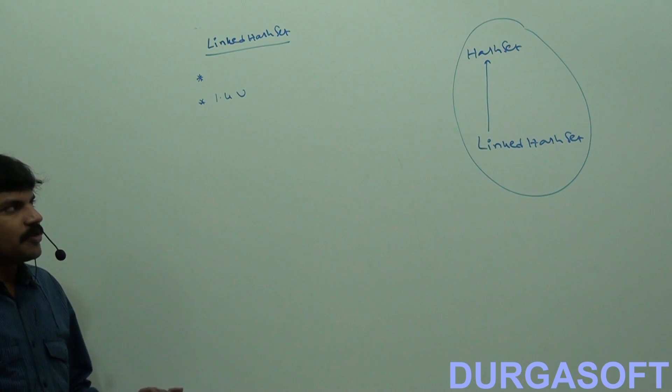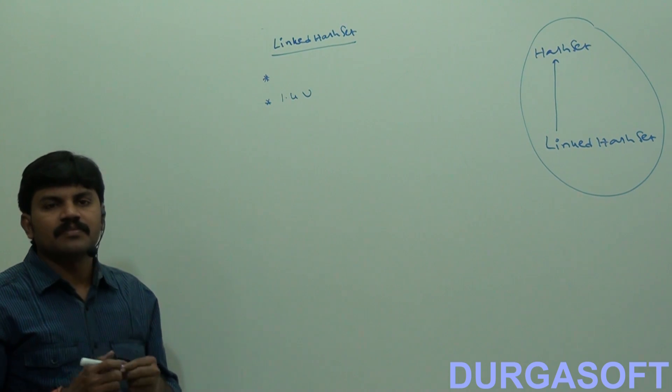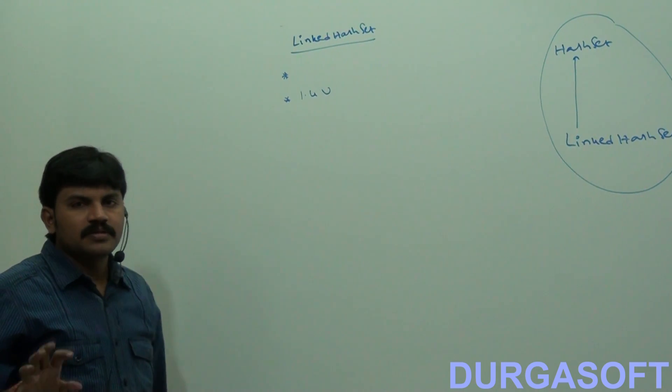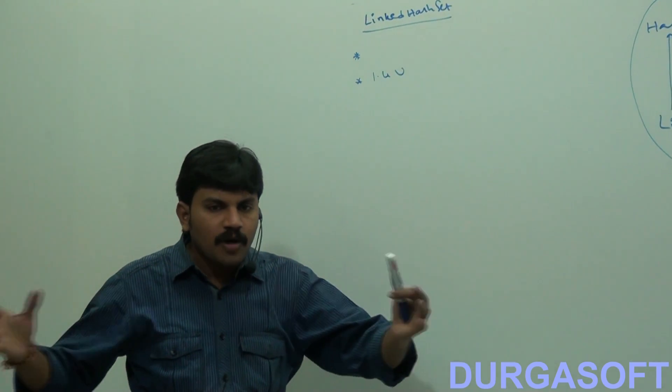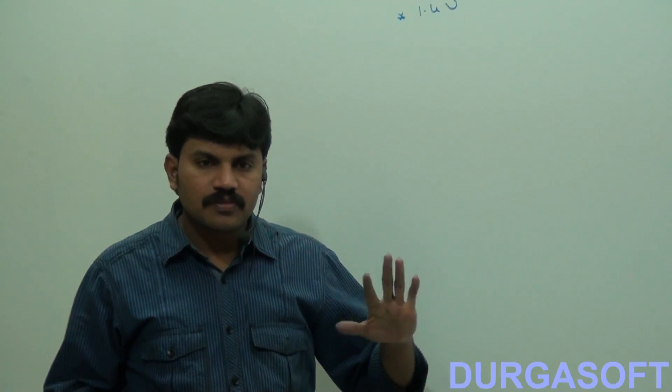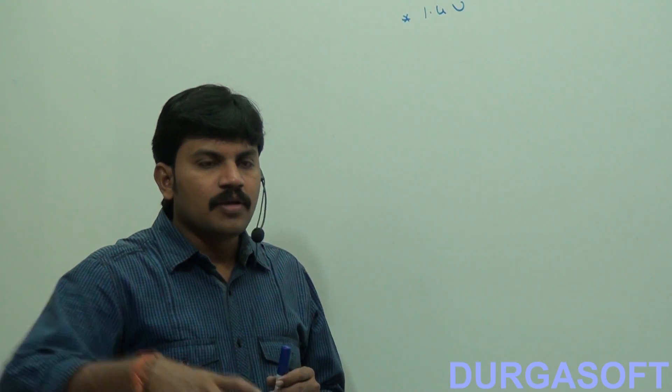What is the difference between HashSet and LinkedHashSet, or when should we go for LinkedHashSet? Very simply, sometimes our programming requirement is to represent a group of individual objects where duplicates are not allowed but insertion order must be preserved — in which order we inserted, in that same order the objects should be stored internally. Then we should go for LinkedHashSet.